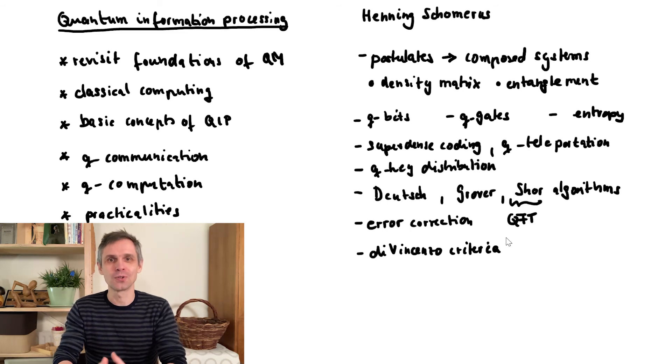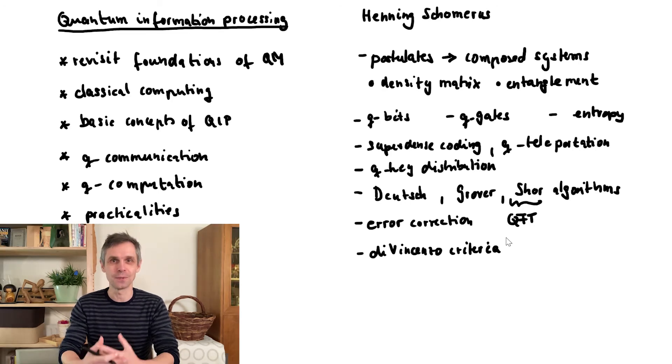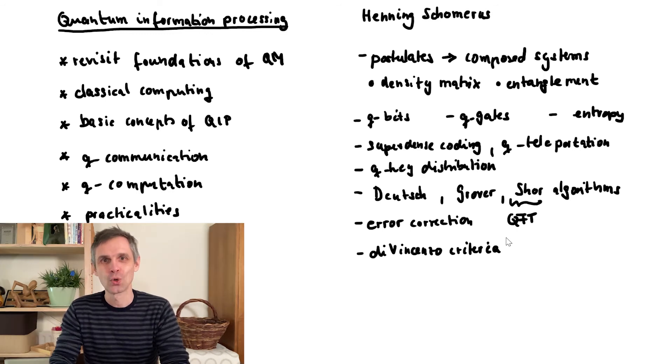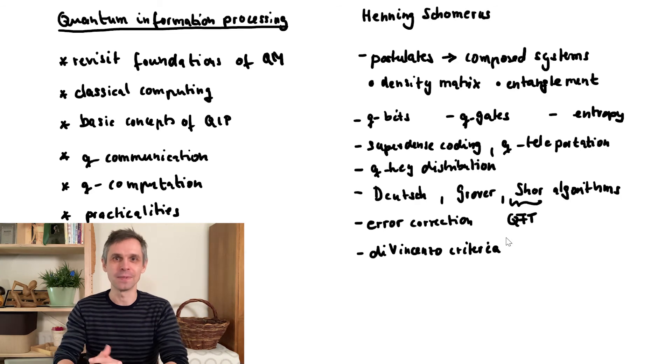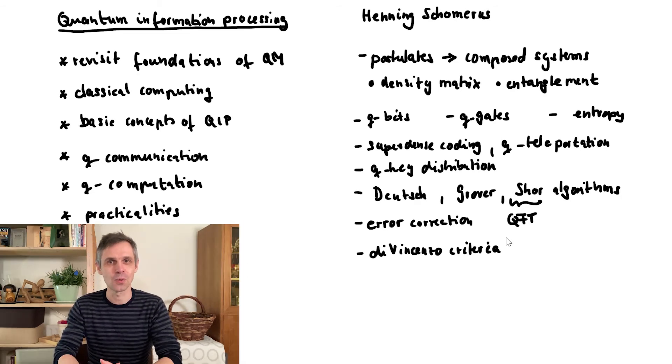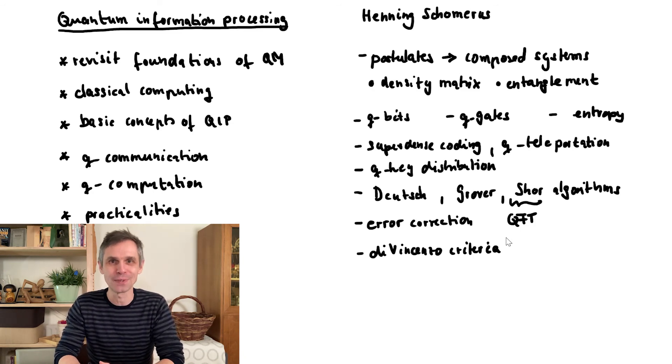In there, I'm also going to list a number of platforms, say quantum optical systems, condensed matter systems and so forth, so that you get a good idea of which sort of physical systems can actually be used for this purpose. How precise can we build these systems and what are the effects from the environment that can perturb these systems? So how can we best shield these systems from undesired effects from the environment and so forth?